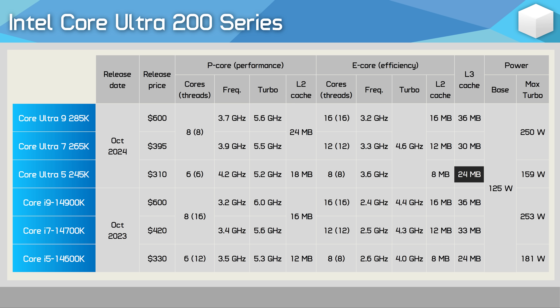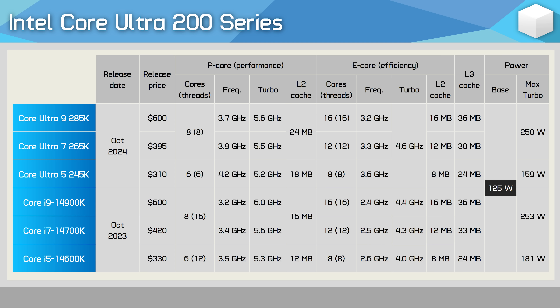In total there's 24 MB of L3 cache and 26 MB of L2 cache. Each P core receives 3 MB of L2 while the E cores get 4 MB per cluster, with each cluster containing four cores. The base TDP is 125 watts with a max turbo of 159 watts, and the MSRP is $310 US.